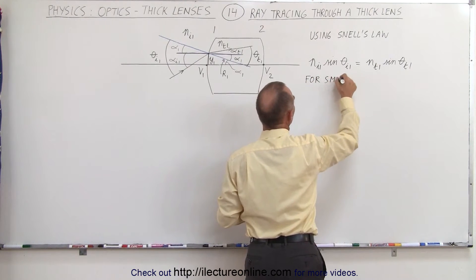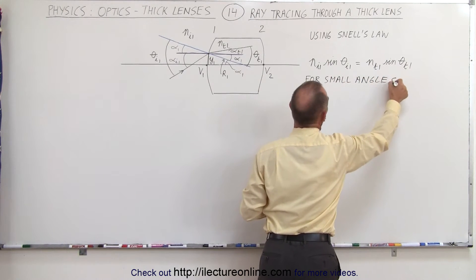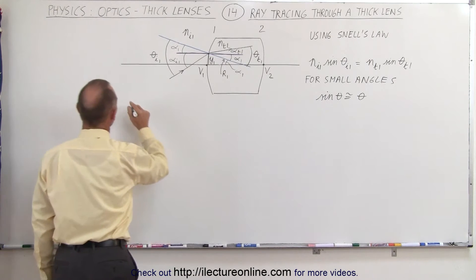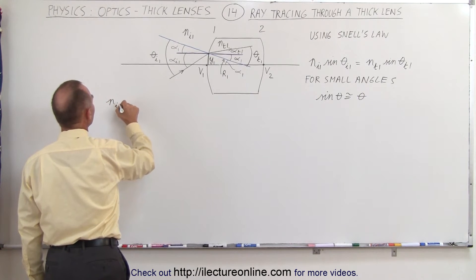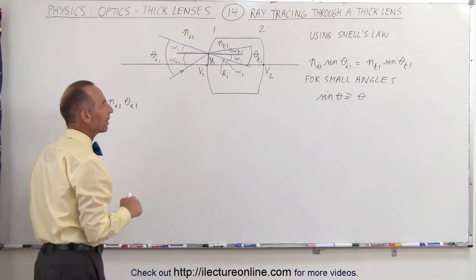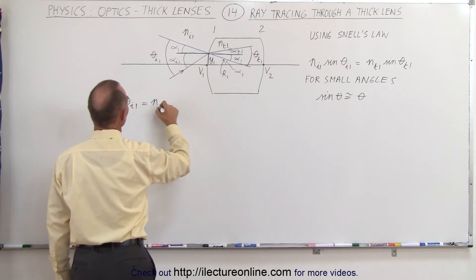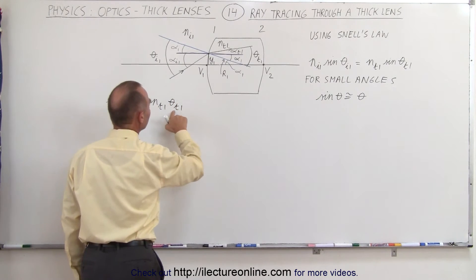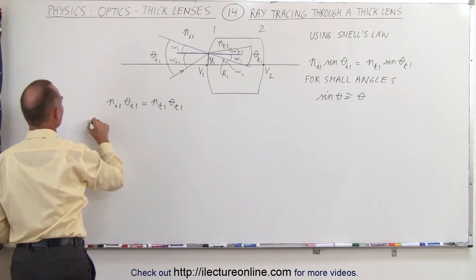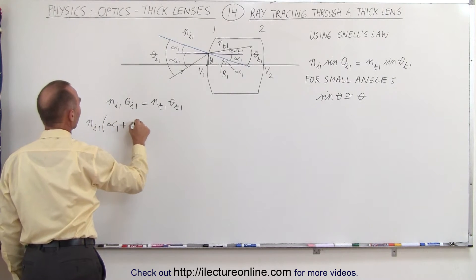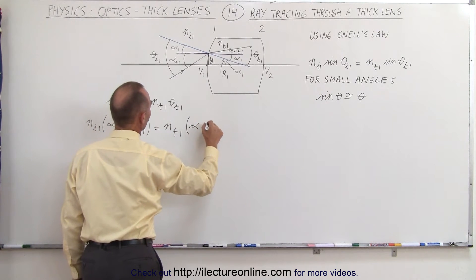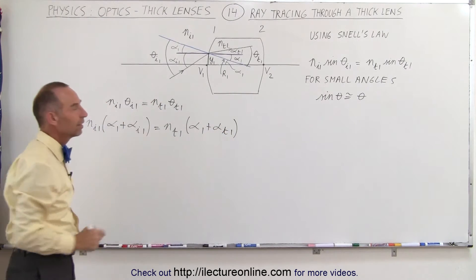Another approximation we're going to use is the small angle approximation. For small angles, we can say that the sine of theta is approximately equal to theta. Making that substitution, we can write that the index of refraction on the incident side of boundary 1 times theta_I1 equals the index of refraction on the transmitted side times theta_T1. Since these angles are the sum of the component angles, we then have n_I1 times (alpha_1 + alpha_I1) must equal n_T1 times (alpha_1 + alpha_T1).